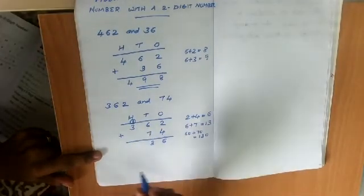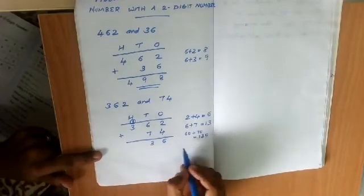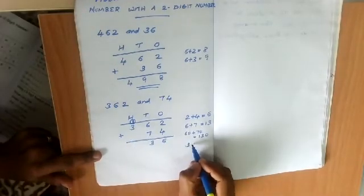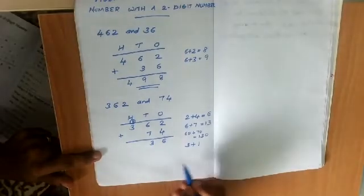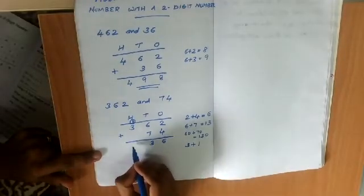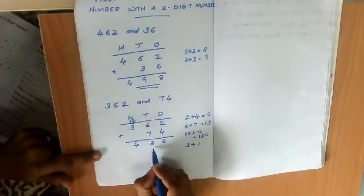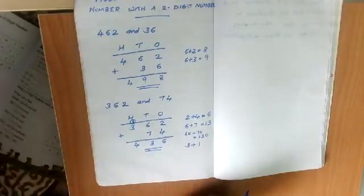Now in the hundreds place there are 3 and the carried 1. So 3 plus 1 is equal to 4. The answer is 436.